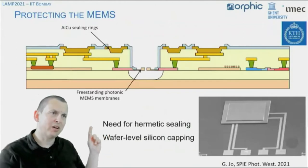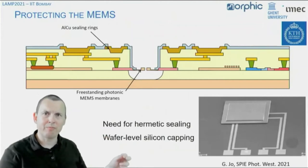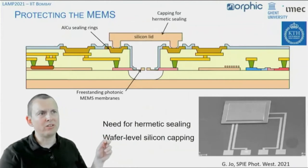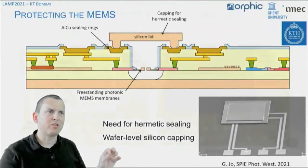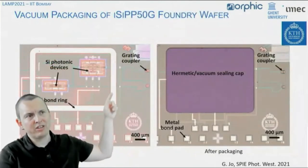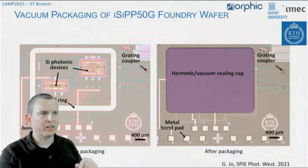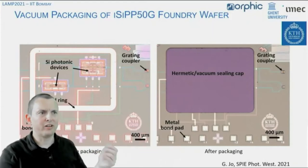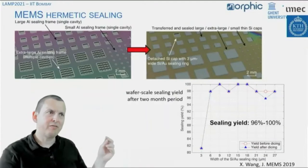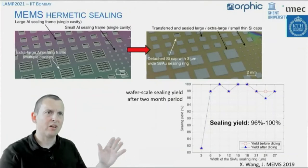These MEMS devices require care: they're freestanding, so any mechanical perturbation can damage them. As a result, we also included a silicon sealing technique applicable on a large scale over a large circuit on the wafer, hermetically sealing the MEMS inside. We use metal sealing rings as a bonding interface and then put silicon lids on top of them, protecting the MEMS but still ensuring access to the electrical and optical interfaces of the grating coupler and bond pads. These devices work really well — we've tested the vacuum sealing quality and it's very, very stable.